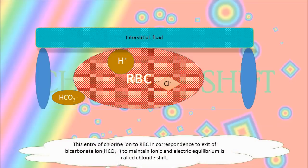So what is chloride shift? Chloride shift is simply the entry of chlorine ion to RBC in correspondence to exit of bicarbonate ion (HCO3-) to maintain ionic and electrical equilibrium.